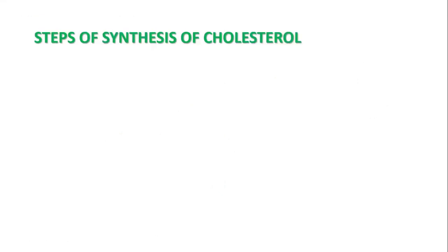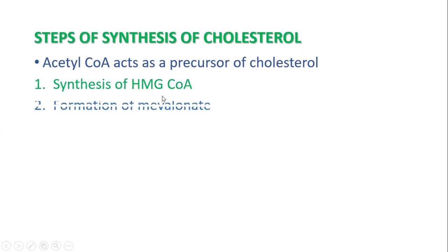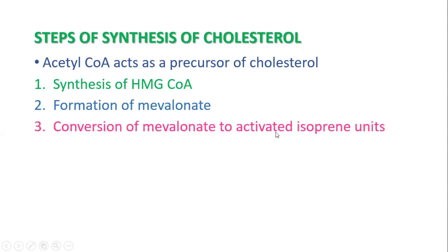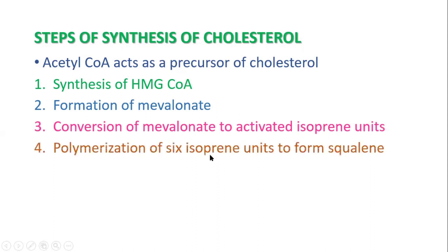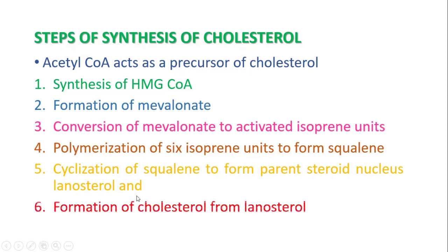The steps of cholesterol synthesis: the precursor is acetyl-CoA. First is the synthesis of HMG-CoA, then the formation of mevalonate, then the conversion of mevalonate to activated isoprene units, then polymerization of 6 isoprene units to form squalene, then cyclization of squalene to form the parent steroid nucleus lanosterol, and finally from lanosterol to cholesterol.